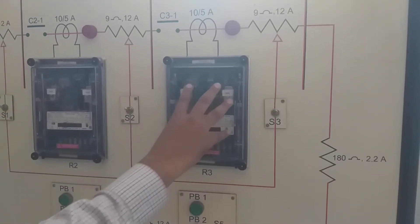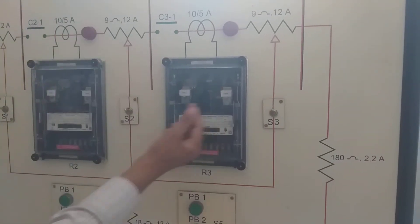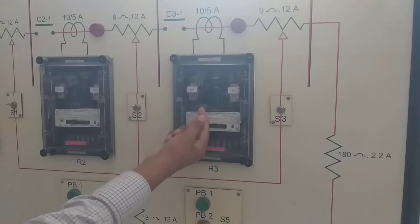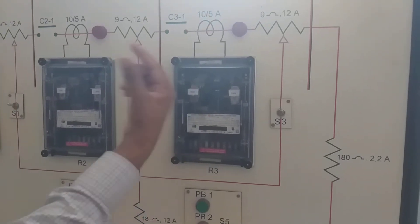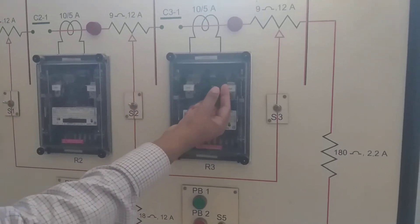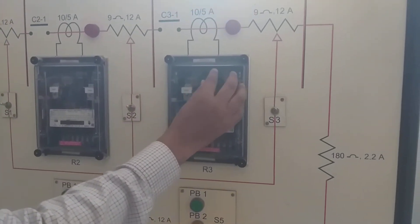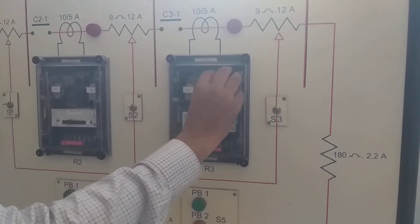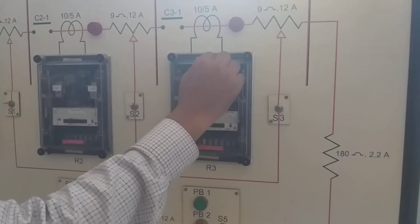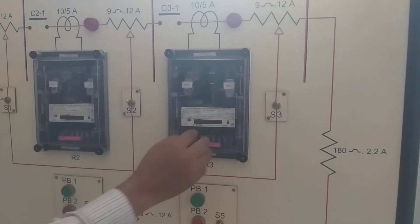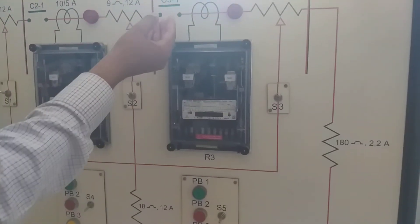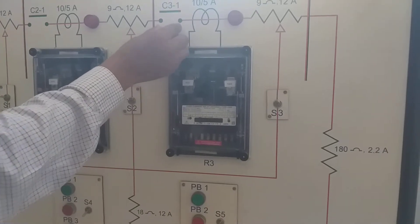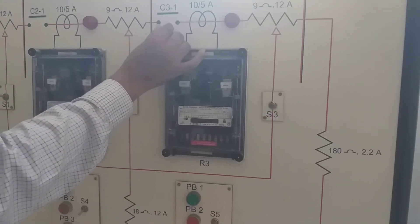The relay will energize, rotating the aluminum disk, and the contact will trip. When the contact trips, the relay sends a signal to the circuit breaker.